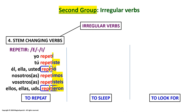Pay special attention to the third person singular: él, ella, usted repitió — the letter E changes into I: repitió. And the plural form: ellos, ellas, ustedes repitieron. We are going to have the same change of the vowel E into I.